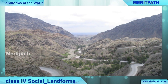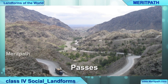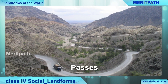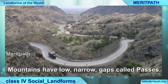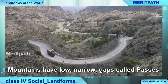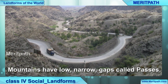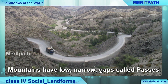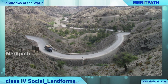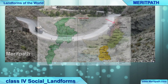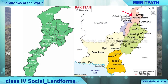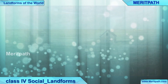Now we will learn about passes. What are passes? Mountains have low, narrow gaps between them — these gaps are called passes. People cross the mountains through these passes. For example, the Khyber Pass in the Himalayas connects Afghanistan and Pakistan.